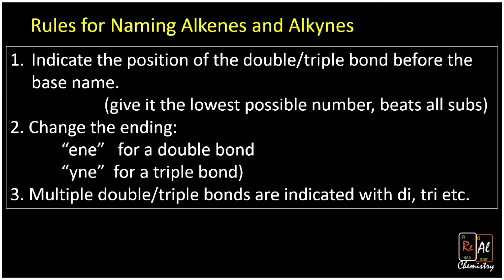Here's a summary of the rules we've gone over for naming alkenes and alkynes. Remember that we indicate the position of the double or triple bond before the base name, and we give it the lowest possible number — it beats all the substituents. We change the ending to -ene for a double bond and -yne for a triple bond. Remember that if we have multiple double or triple bonds, they're indicated with di, tri, or tetra, whatever you need in terms of the number of bonds. Thanks for watching this episode of Real Chemistry.